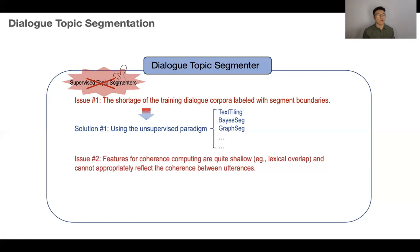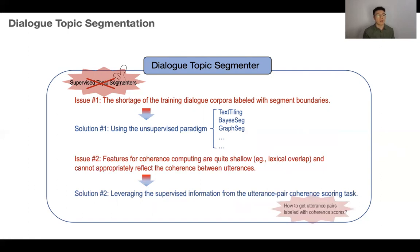However, the current features used for coherence computing are quite shallow, like lexical overlap, and cannot appropriately reflect the coherence or topic relevance between utterances. Hence, in this work, we propose to leverage the more advanced signals provided by the supervised utterance-pair coherent scoring task. Then, the main issue urgent to resolve is how to get utterance pairs labeled with coherent scores.